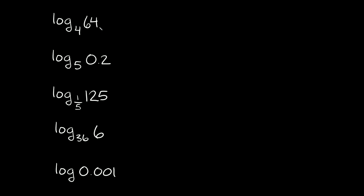So what we're basically looking for here is an exponent. We're trying to figure out: this number raised to what power is equal to 64? So we can write it as 4 raised to what power is equal to 64. Well, 4 raised to the third power is equal to 64, so our exponent is just equal to 3. That means log base 4 of 64 is equal to 3.